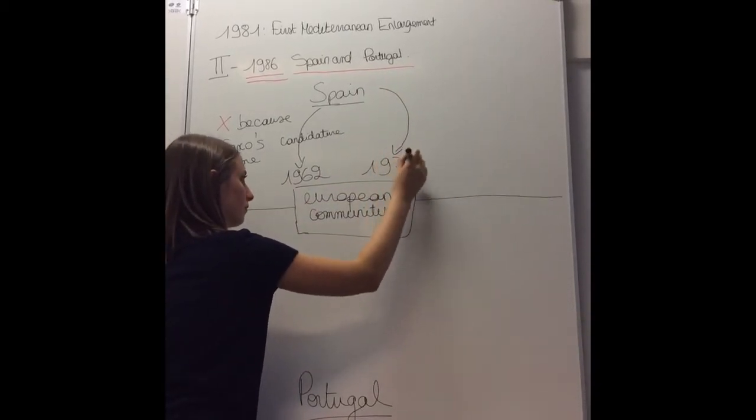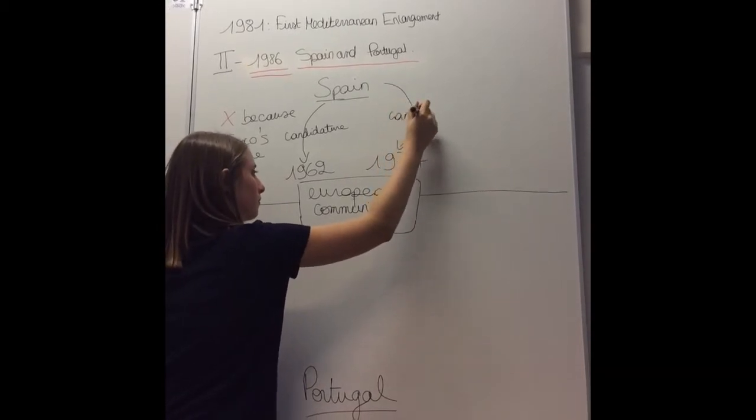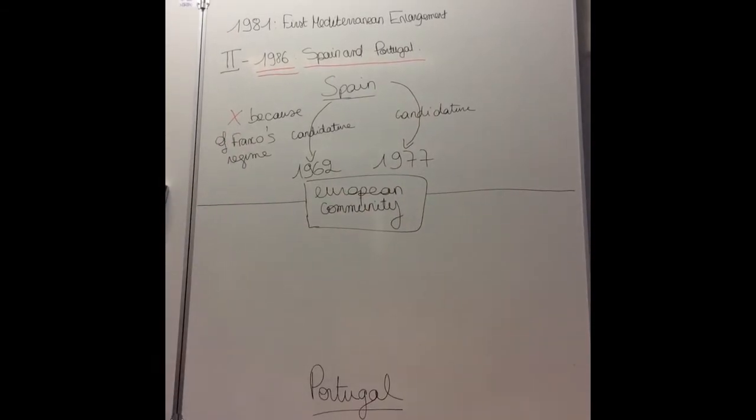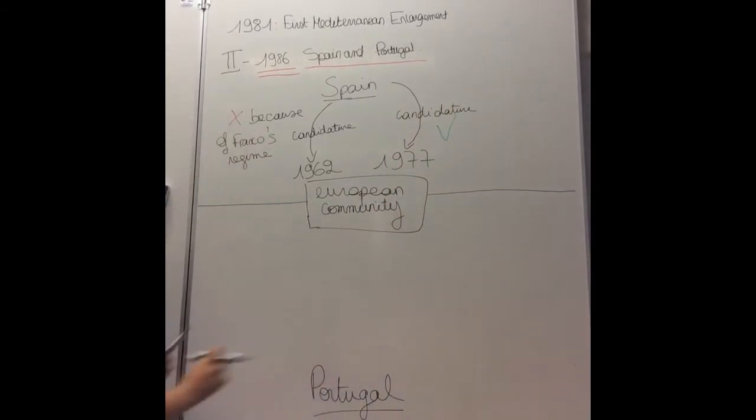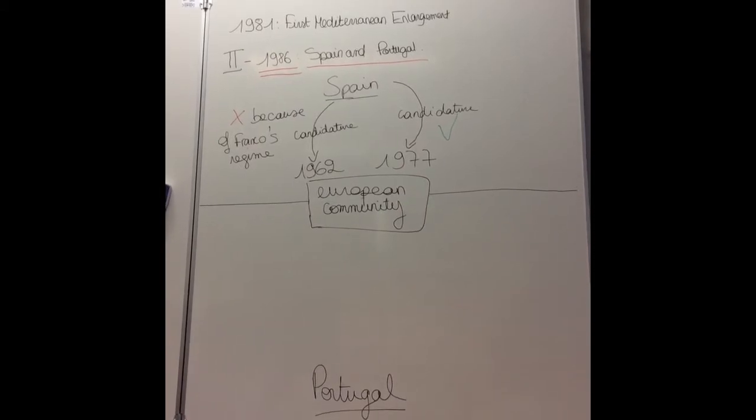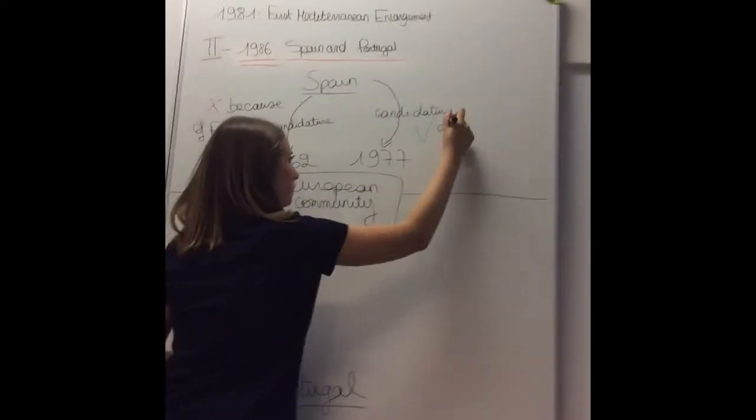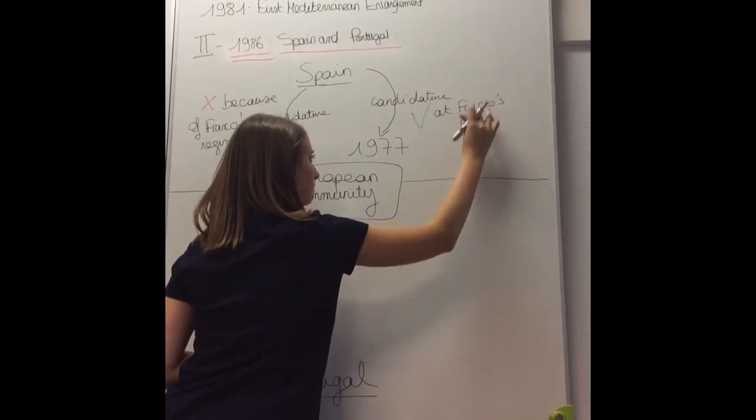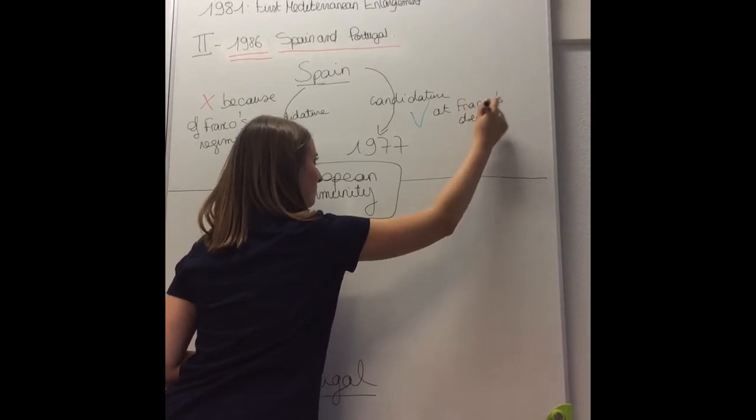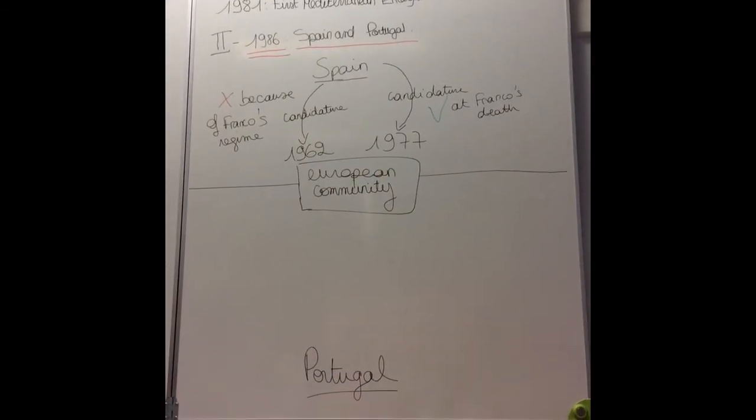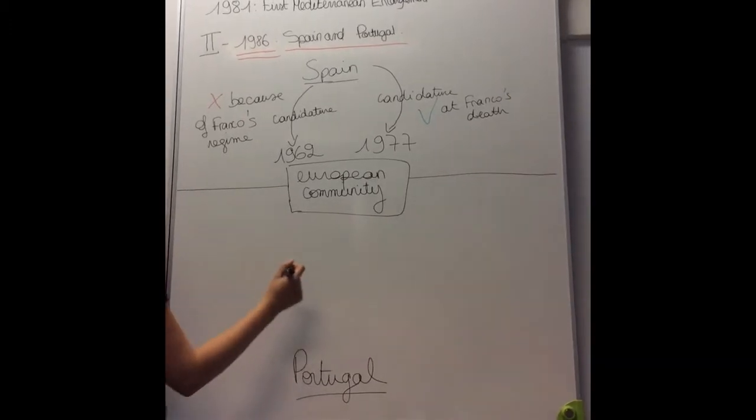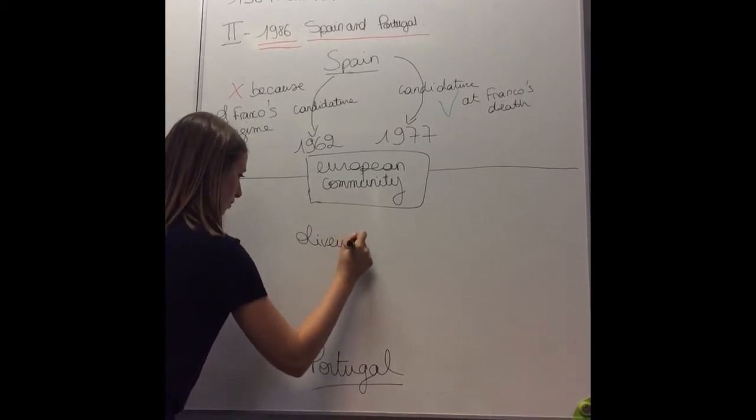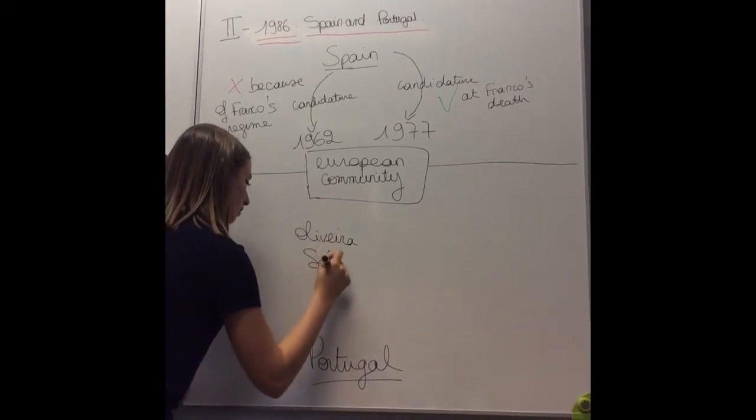At Franco's death, Spain made another candidature in 1977. Portugal made a candidature in 1977 at the death of Antonio de Oliveira Salazar, who was a dictator.